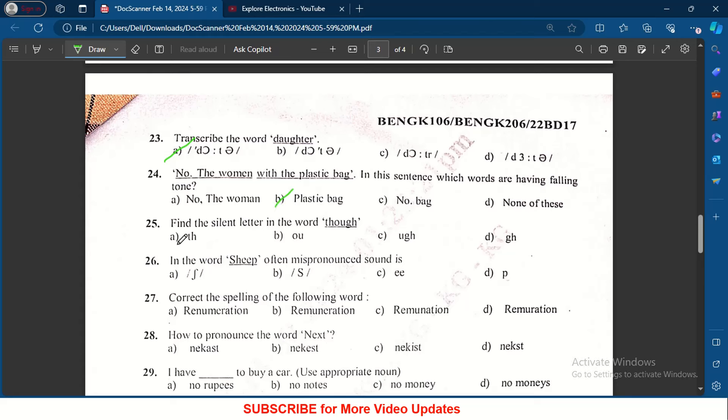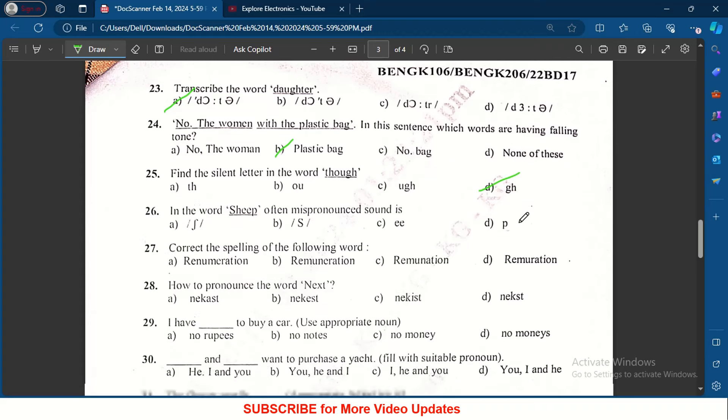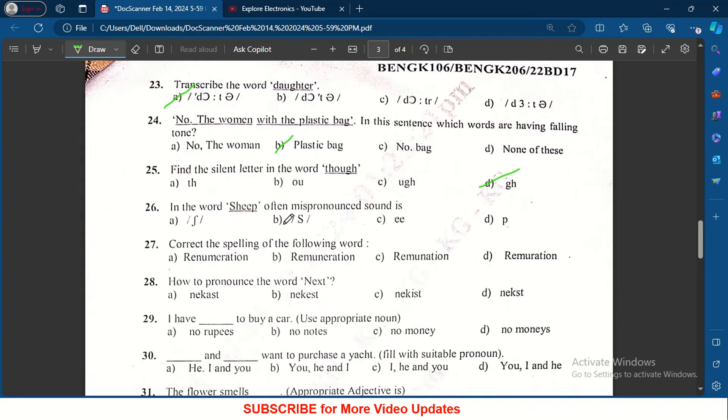Question number 25: find the silent word in the word though. Here the silent word is, the silent word is letter G and H. In the word sheep, often mispronounced sound is...